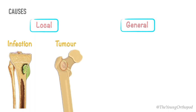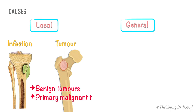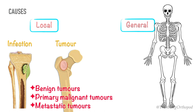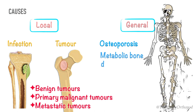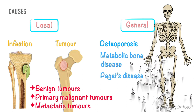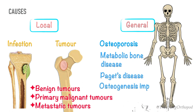Tumor deposits can be benign tumors, primary malignant tumors, or metastatic tumors. Generalized bone diseases include osteoporosis, metabolic bone disease, Paget's disease, and osteogenesis imperfecta.